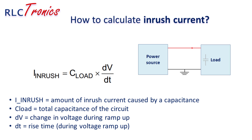When you initially apply voltage to a circuit containing a capacitor, there is effectively no charge stored in the capacitor. Therefore, the initial current flowing into the capacitor can be very high because there is no opposition to the voltage change.